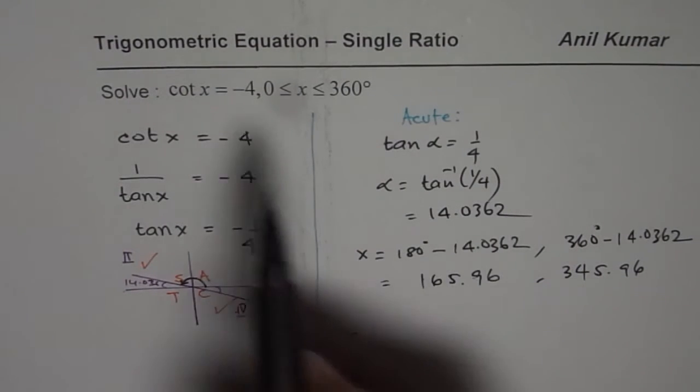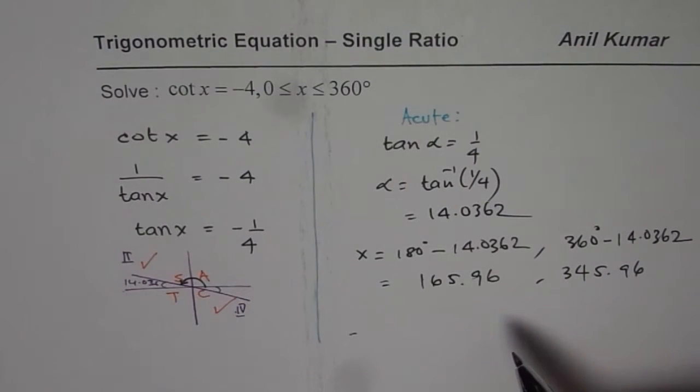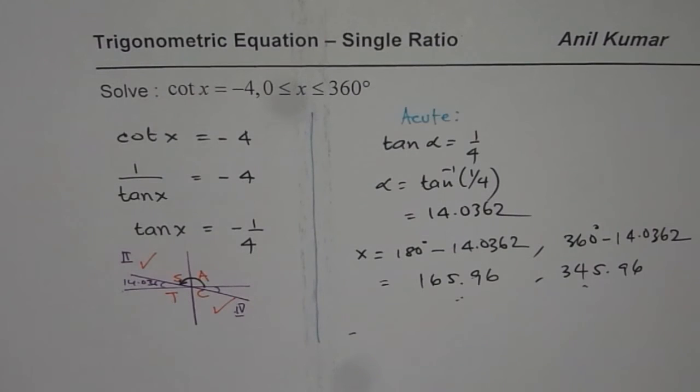Remember also, for tan and cotangent, time period is pi, or 180 degrees, so they are 180 degrees apart. So that is also a way of finding the answer quickly. I hope that helps.